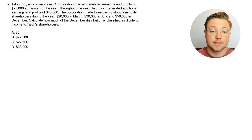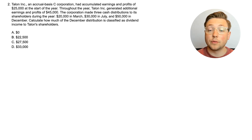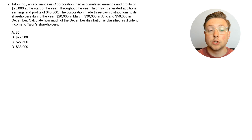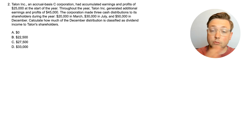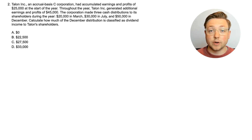Here is question two. Talon Inc., an accrual basis C-Corporation, had accumulated earnings and profits of $25,000 at the start of the year. Throughout the year, Talon Inc. generated additional earnings and profits of $45,000. The corporation made three cash distributions to its shareholders during the year: $20,000 in March, $30,000 in July, and $50,000 in December. Calculate how much of the December distribution is classified as dividend income to Talon's shareholders. Before it was just giving us the total distributions, but now there are three separate distributions, so let's see how that works.